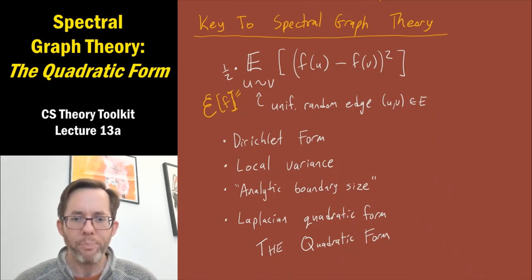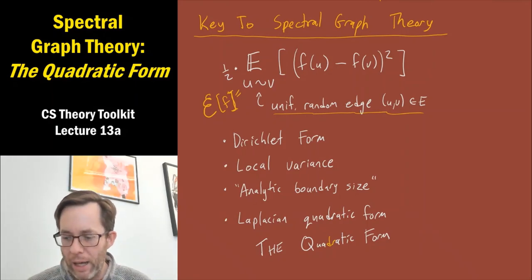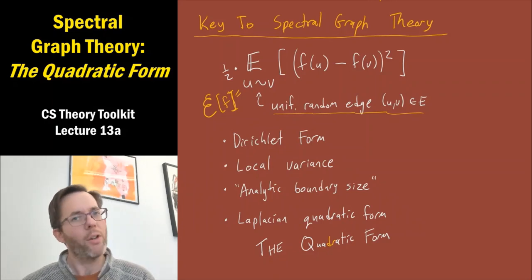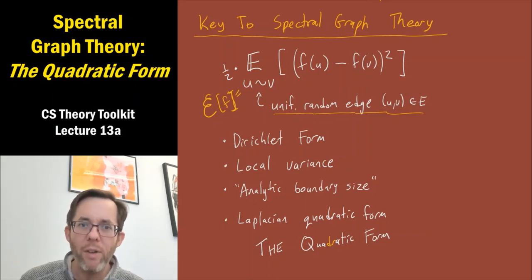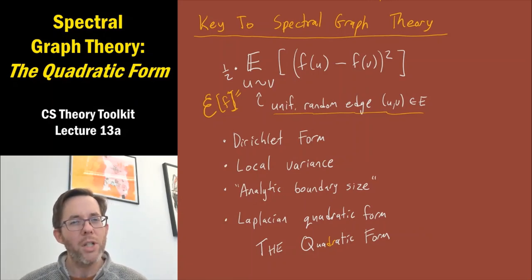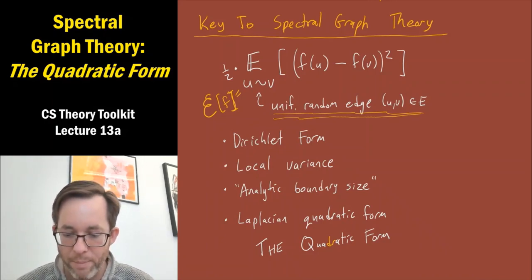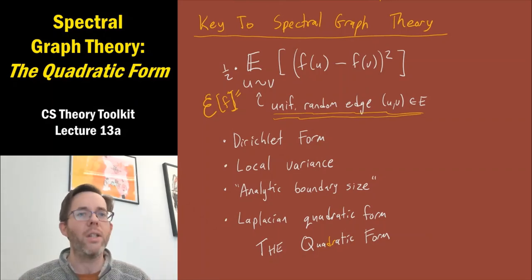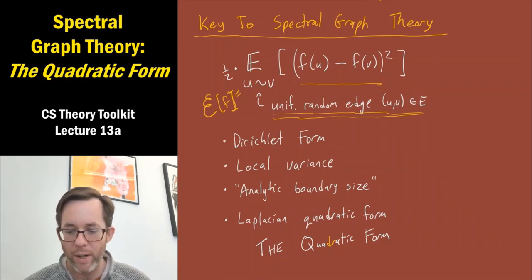Just one more comment about choosing a uniformly random edge: I've written u, v in round brackets as if the vertices are ordered. In an undirected graph we normally think of edges as unordered. But what's very typically nice in spectral graph theory is to think of each undirected edge as a pair of opposing directed edges — one going from u to v and one from v to u. So think of this experiment as: half the time you choose the directed edge going from u to v, and half the time you choose the one from v to u. This is symmetric since we square the difference, but it's good to keep in mind.